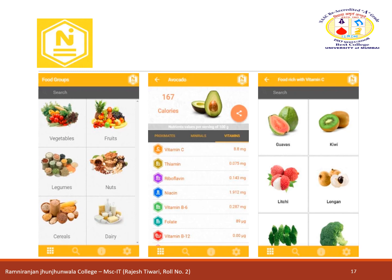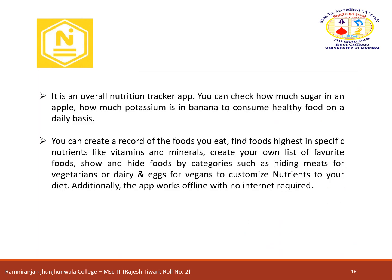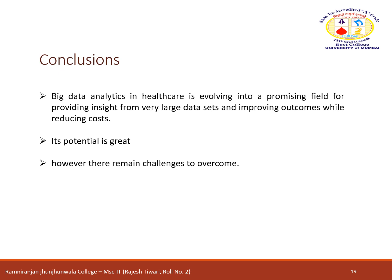The last one is the Nutrients app — an overall nutrition tracker. You can check how much sugar is in your apple or how much potassium is in your banana to consume healthy food on a daily basis. You can create a record of the food you eat, find foods highest in specific nutrients like vitamins and minerals, create your own list of favorite foods, and hide food by categories — such as hiding meats for vegetarians or dairy and eggs for vegans — to customize nutrition to your diet.